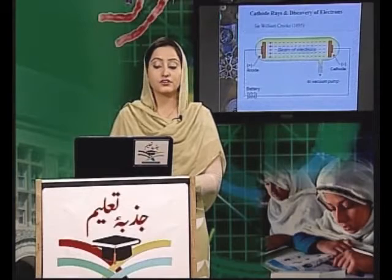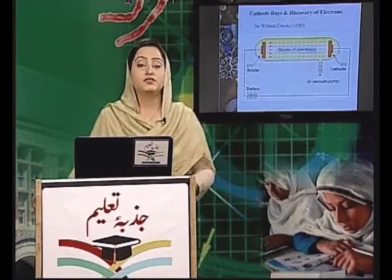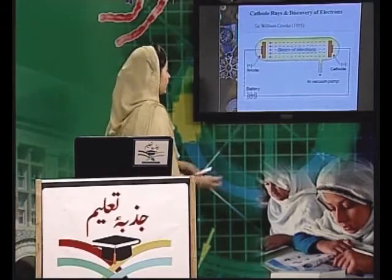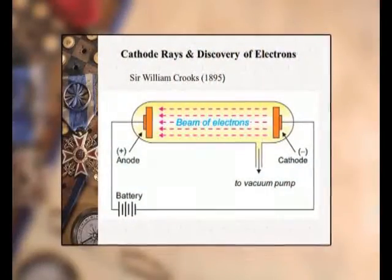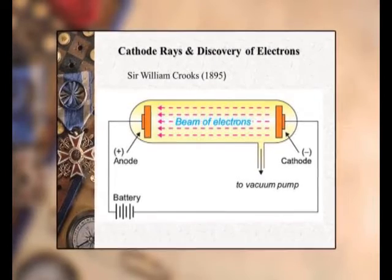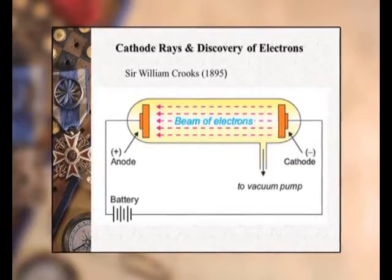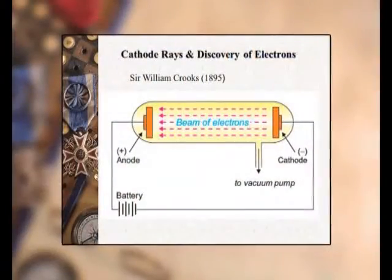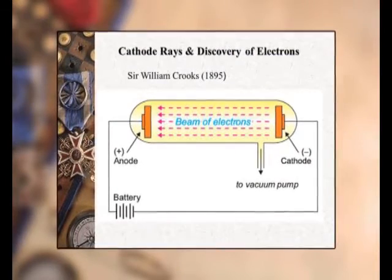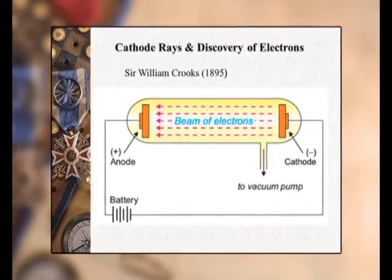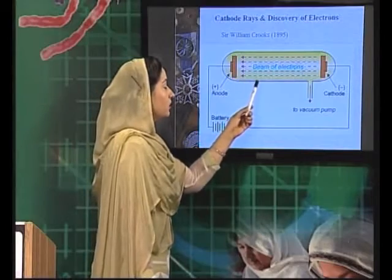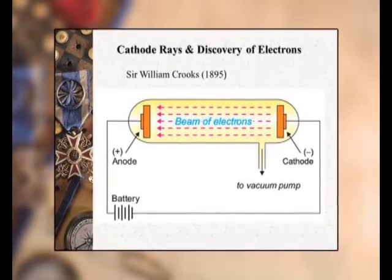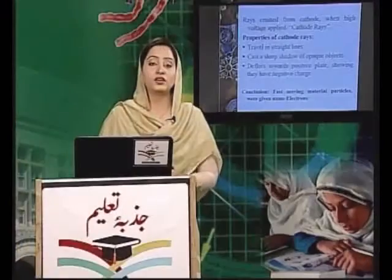سب سے پہلے ہم پڑھیں گے discovery of electrons and cathode rays۔ کس طریقے سے electron کی discovery ہوئی؟ Sir William Crookes نے 1895 میں electron کی discovery کی اور اس کے لیے انہوں نے جو experiment کیا، اس کا setup کچھ اس طرح تھا۔ انہوں نے ایک glass tube لی جس کے اندر کچھ gas fill کروائی اور دو electrodes set کیے جنہیں ایک high voltage battery سے connect کیا۔ جب اس discharge tube میں سے high voltage گزری تو اس نے gas کو اس کے sub-atomic particles میں توڑا اور tube کے اندر lights دیکھی گئیں۔